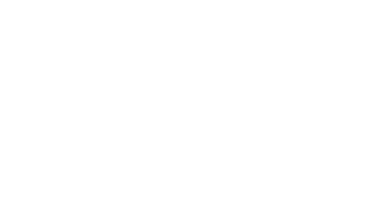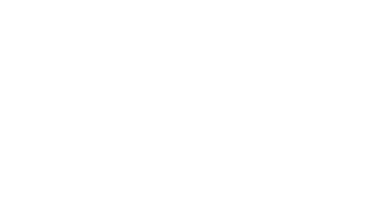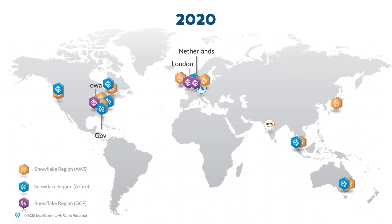In 2019, we added eight new Snowflake regions stretching our data cloud all the way to Asia. Four of these regions were added to the Azure cloud: Toronto in Canada, Singapore, and Sydney in Australia. Four were added to the AWS cloud: Ohio in the US, Toronto in Canada, Singapore, and Tokyo in Japan. 2020 is another big milestone with the introduction of four Google Cloud regions. We have already added seven new Snowflake regions this year: three GCP regions in Iowa, Netherlands, and London; two Azure regions including a government region in the US East and Switzerland in Europe; and two AWS regions including another government region in the US East and Mumbai in India.